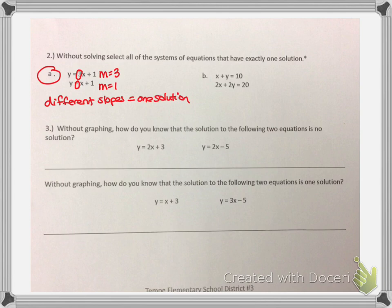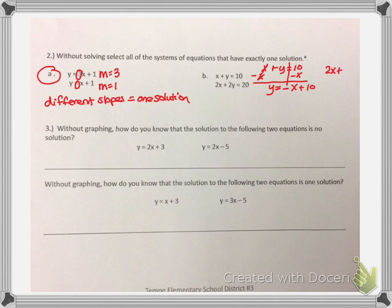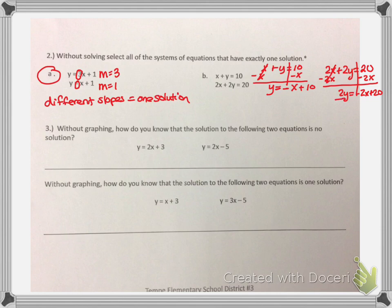I am also going to look at B. I know it says without solving, but I can manipulate the equation. When I have x plus y equals 10, I can move the x to the other side by doing its inverse, negative x. So this equation is really y equals negative x plus 10. I can do that with the second equation too, since it's not in slope-intercept form. So 2x plus 2y equals 20 — I move the x by doing its inverse. The inverses cancel, 2y comes down: negative 2x plus 20. Now I divide everything by the coefficient of 2. 2 divided by 2 gives 1y, negative 2 divided by 2 gives negative 1x, and 20 divided by 2 gives positive 10.